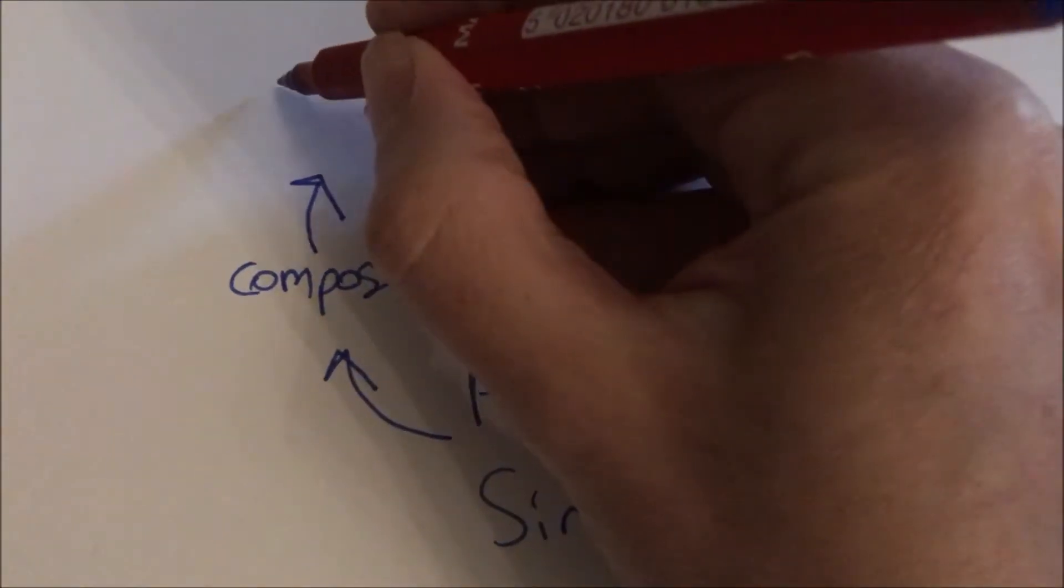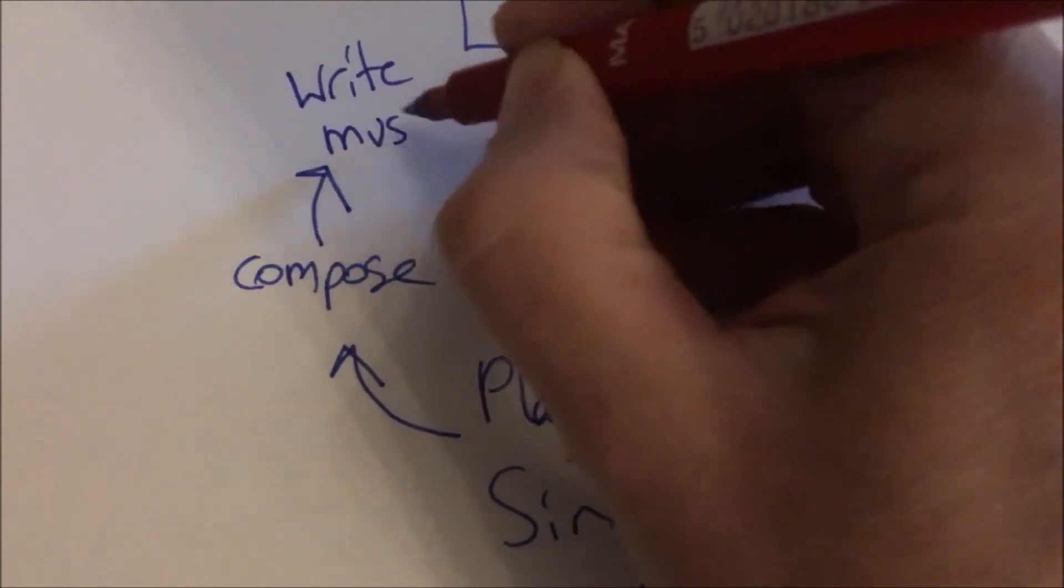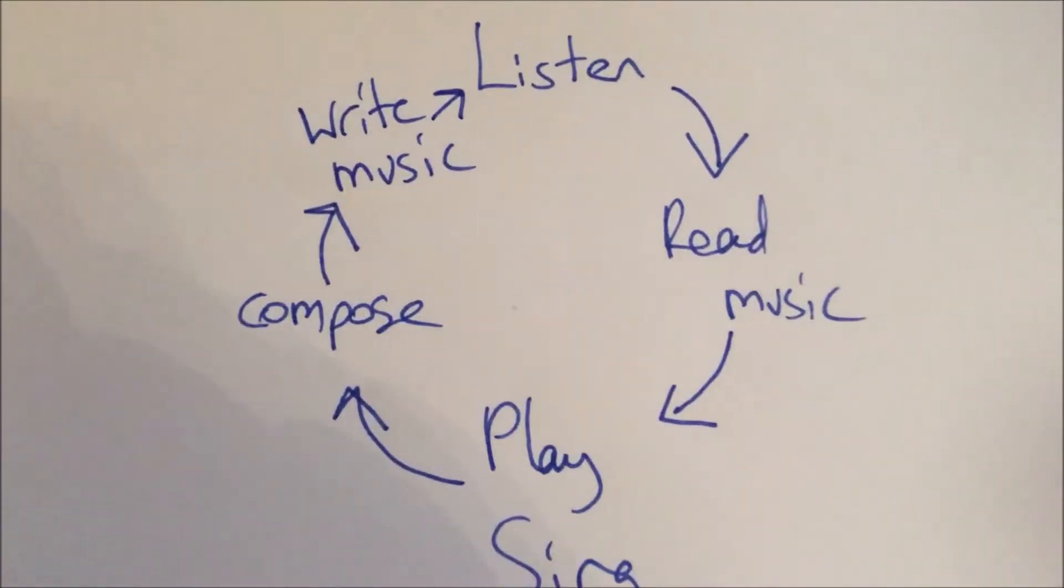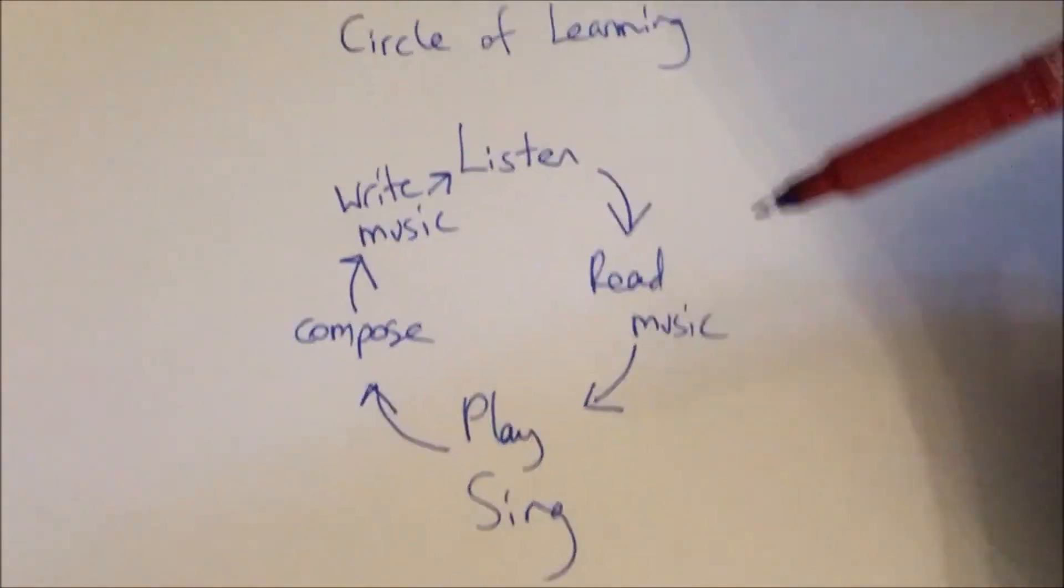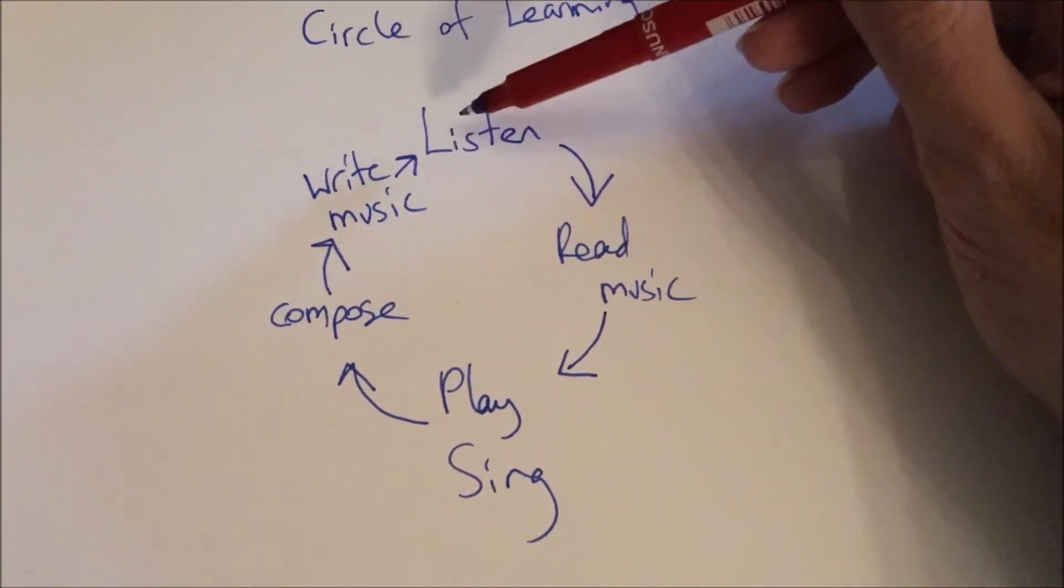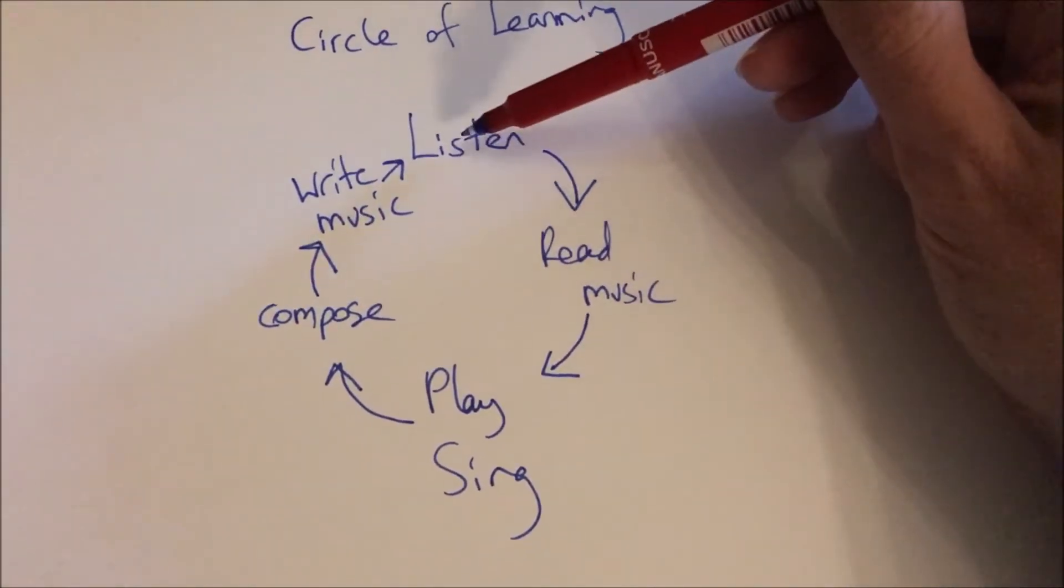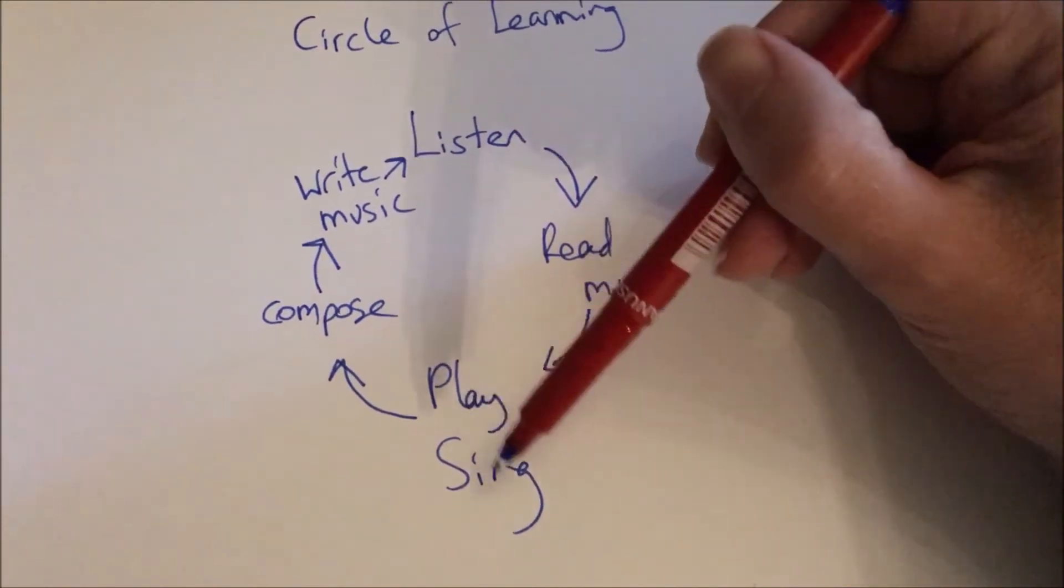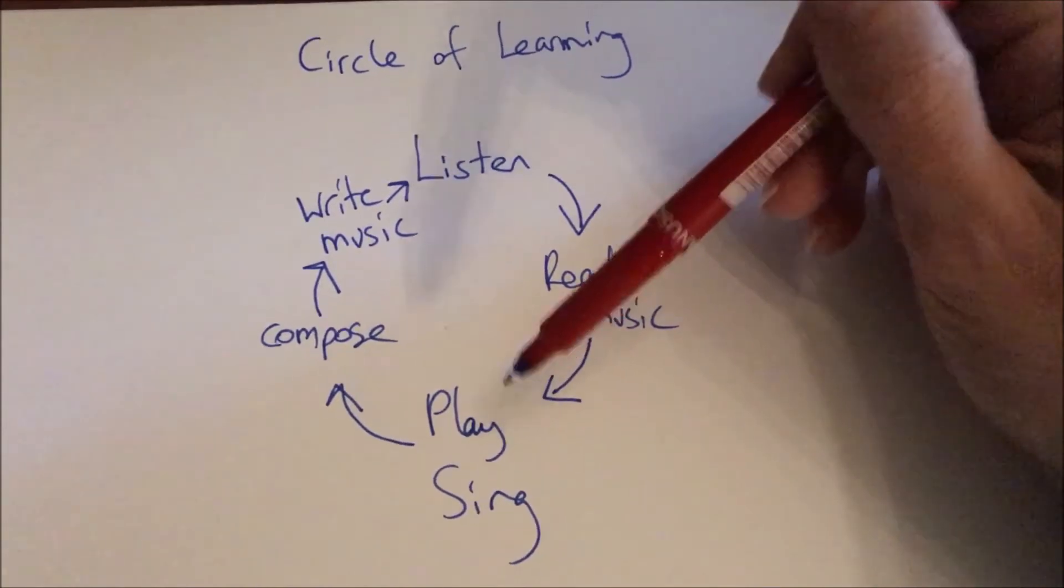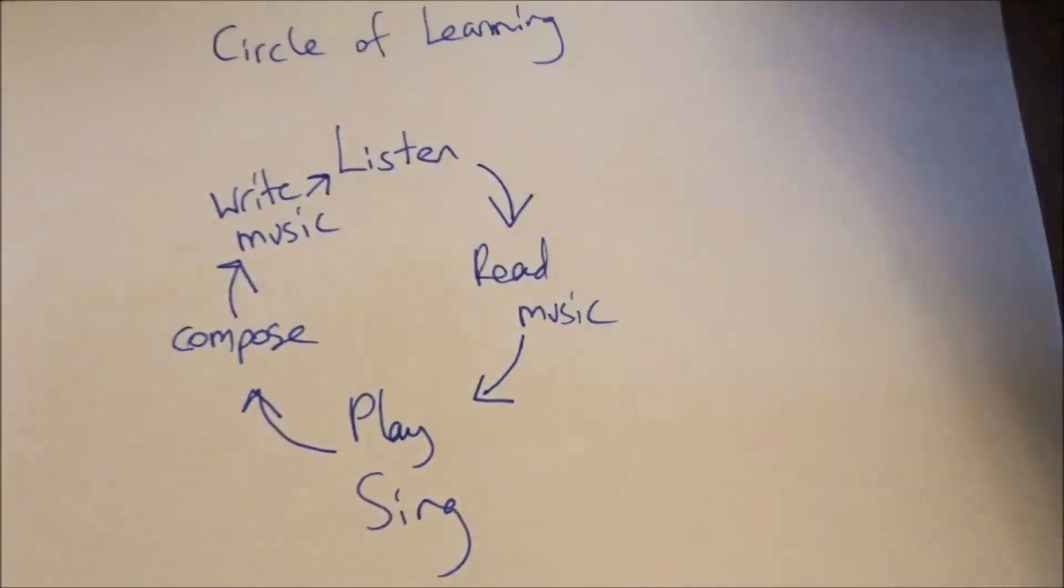When you've made up your own music, the next thing that you're going to do is write it down. So it's important that we learn a bit about how to write music down. Once you've written your music down, you've completed the circle of learning in music and you go back to listening. But this time, you can listen to music that you or your friends have made up, and you can listen to music that you have played and sang and recorded, or that other people are playing and singing. So that's the circle of learning.